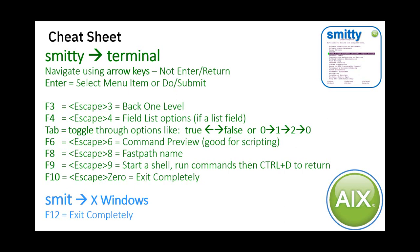F3 goes back one level. F4 brings up a list of options — for example, a list of file systems you want to delete or change; select the one you want and hit Enter to go back to the other fields. The Tab key cycles through fields with limited values, like true/false or yes/no. F6 is command preview — you can see the command that's going to get run. F8 tells you the fast path name so you can go straight to that panel next time. F9 lets you escape from SMITTY, run a few commands, and come back to exactly the same panels. F10 or Escape 0 exits SMITTY completely in one go.